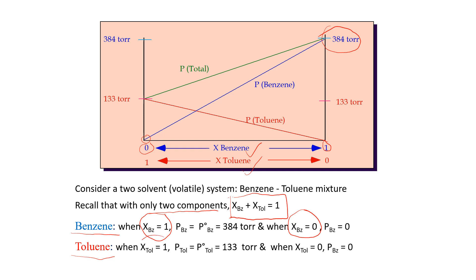For toluene, when the mole fraction equals 1, the vapor pressure exerted by toluene is 133 torr. When the mole fraction is 0, the vapor pressure is also 0. We can see that the intermolecular forces in benzene are lower compared to toluene. Toluene has a higher boiling point because it needs more heat to break the bonds between molecules, giving it a lower vapor pressure compared to benzene. Therefore, benzene is more volatile than toluene.